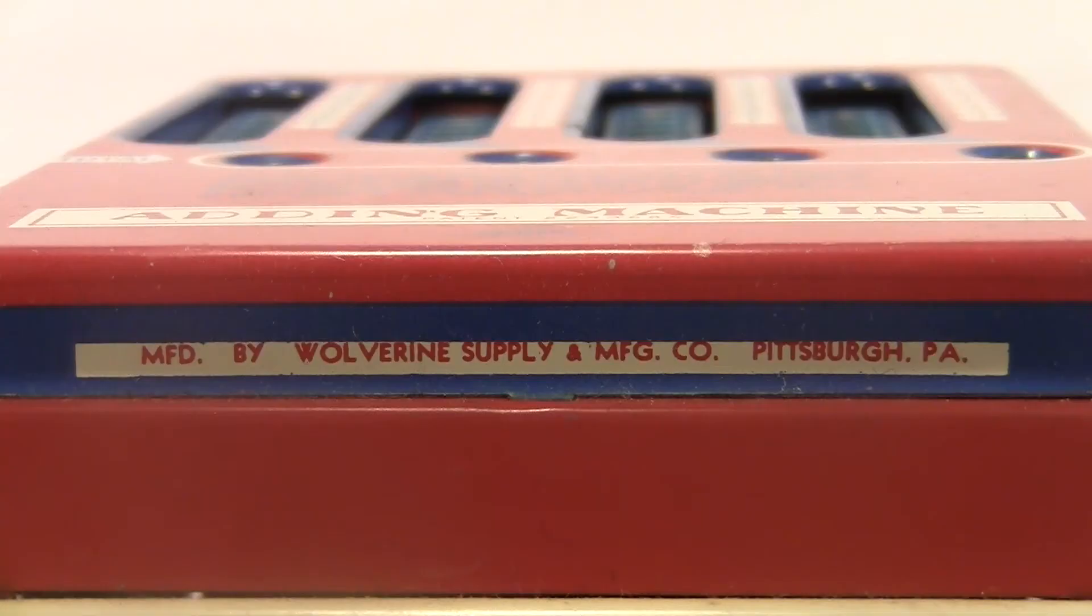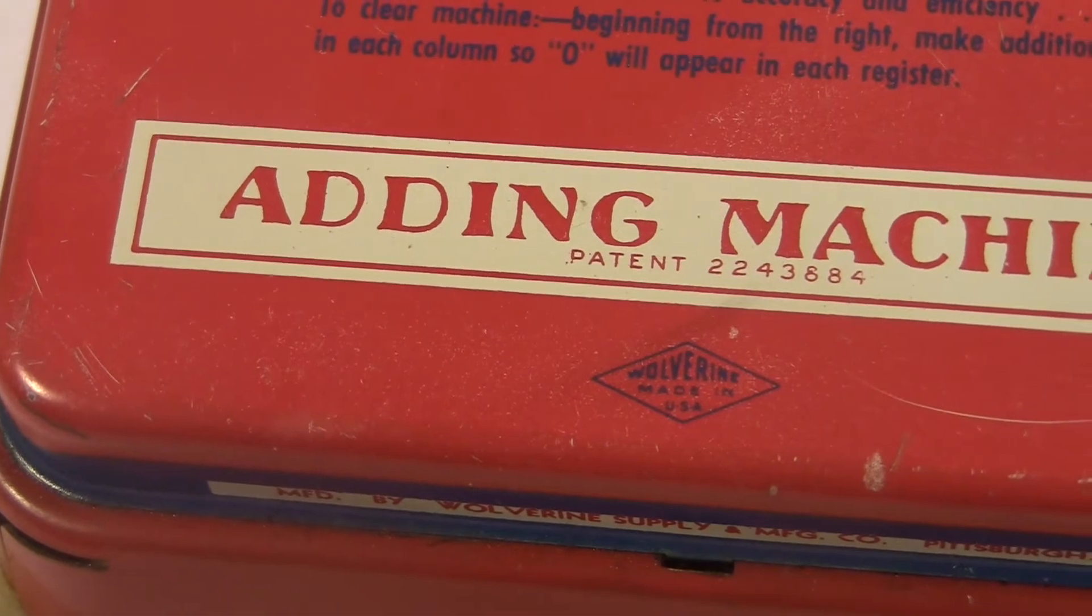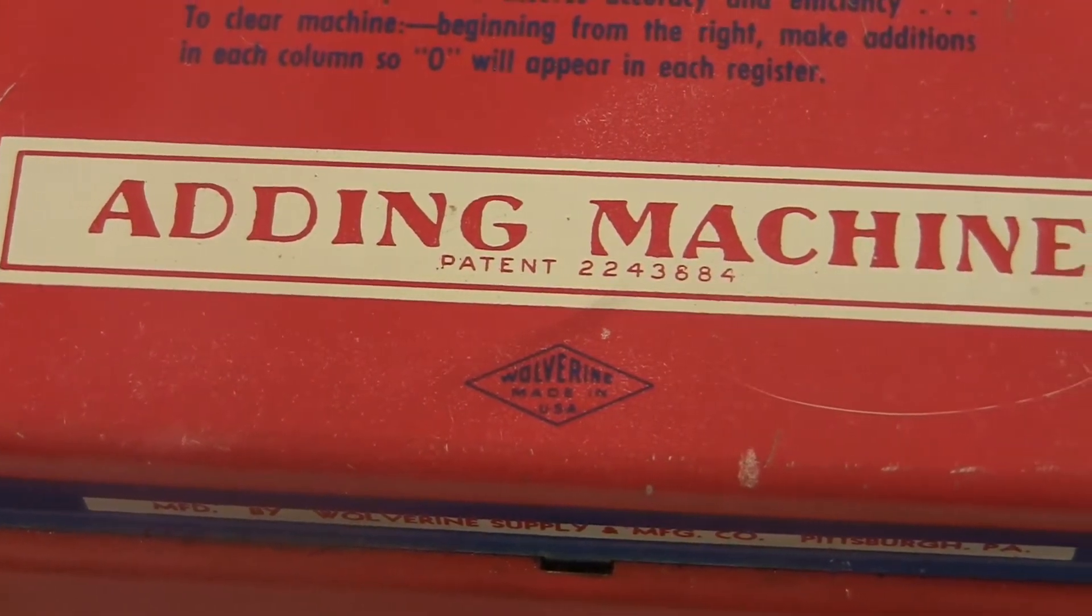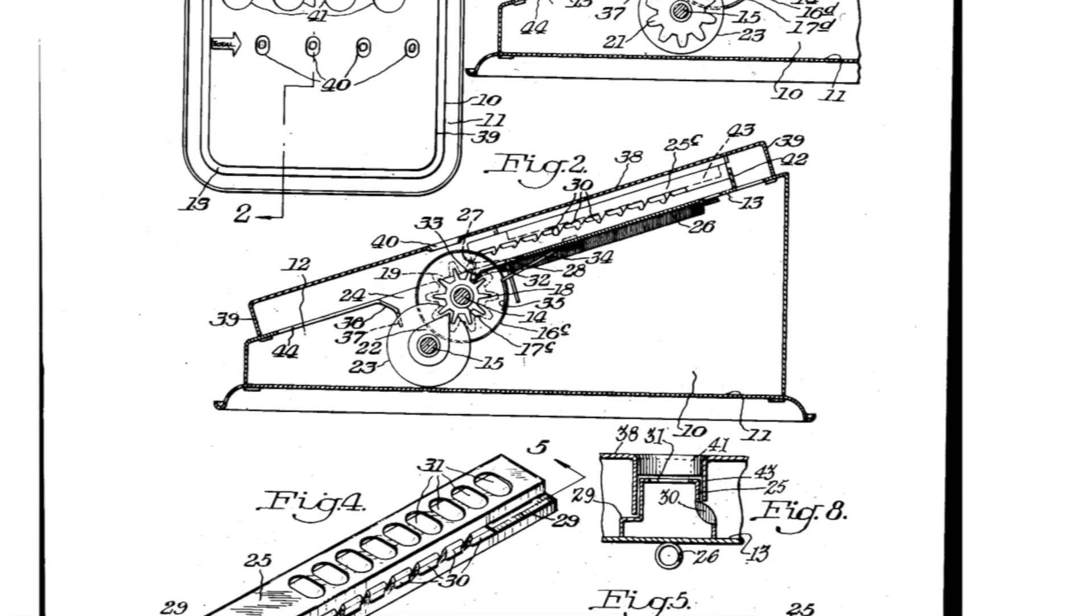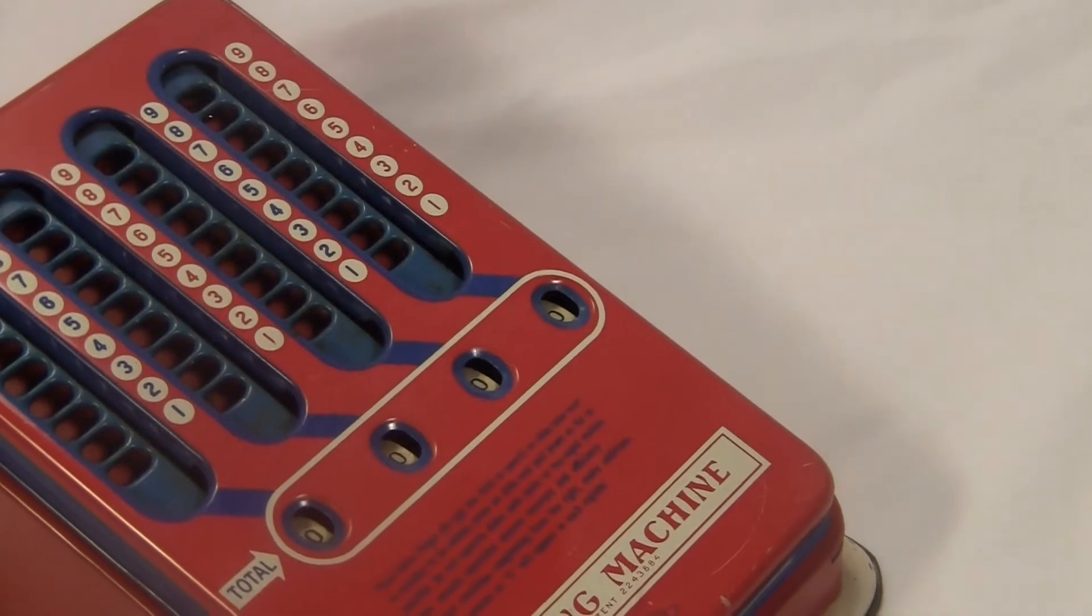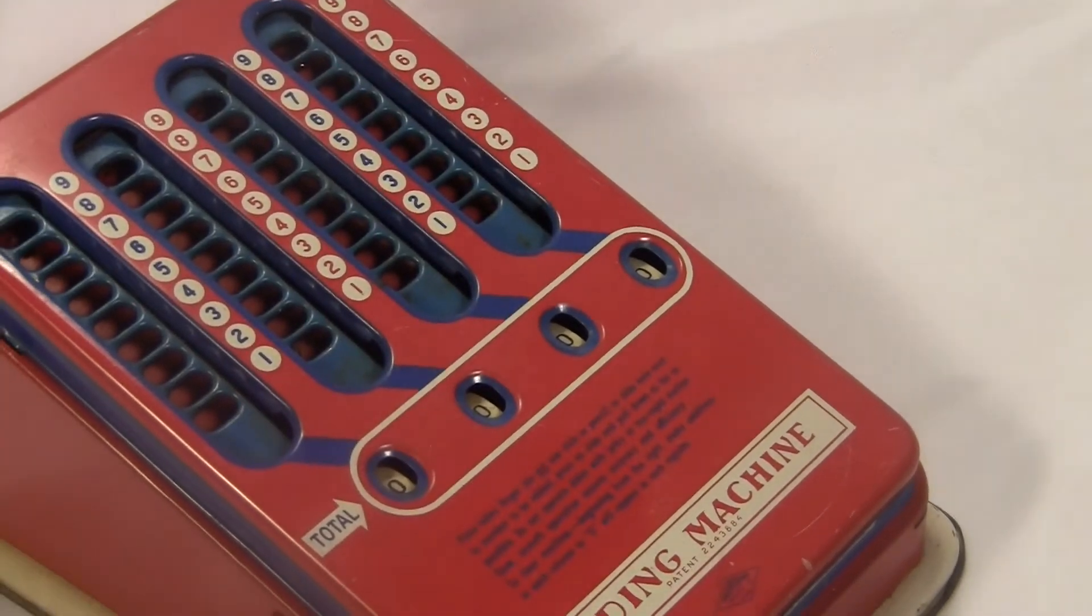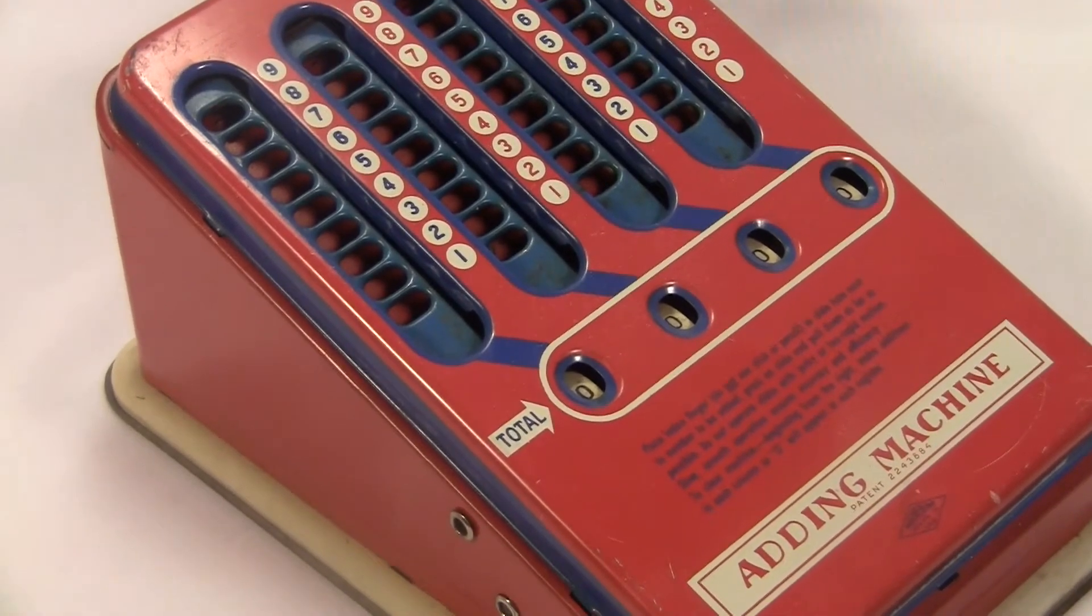This thing was made by the Wolverine Supply and Manufacturing Company in Pittsburgh. They put the patent number right on there. It was submitted by Linus Ritz in 1941. Wolverine officially changed its name to the Wolverine Toy Company in 1963, so this thing must have been made sometime between 1941 and 1963, probably on the earlier side of that window.